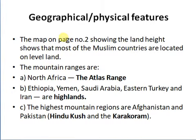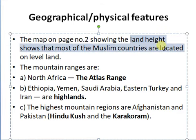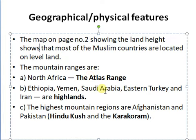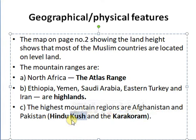Looking at the physical features, you can consult the map on page number two, which shows that most Muslim countries are located on level land. It also includes mountain ranges — for example, in North Africa we have the Atlas range; in Ethiopia, Yemen, Saudi Arabia, Eastern Turkey and Iran, we have highlands. The highest mountain regions of the Islamic countries are Afghanistan and Pakistan, which have the Karakoram range in the north, Gilgit-Baltistan, and the Hindu Kush range in Afghanistan and Pakistan.